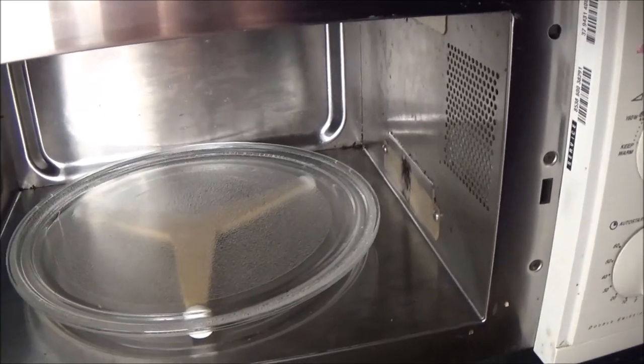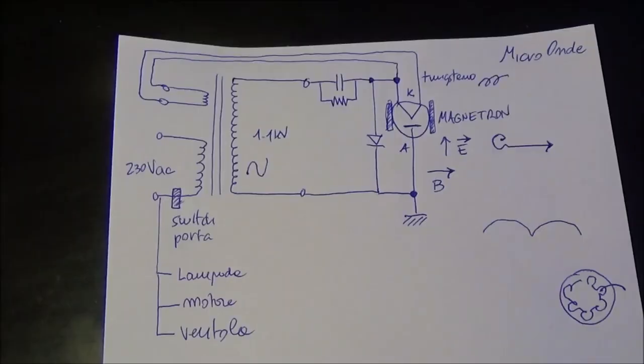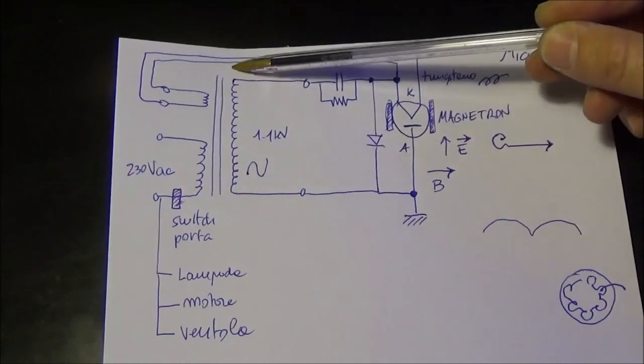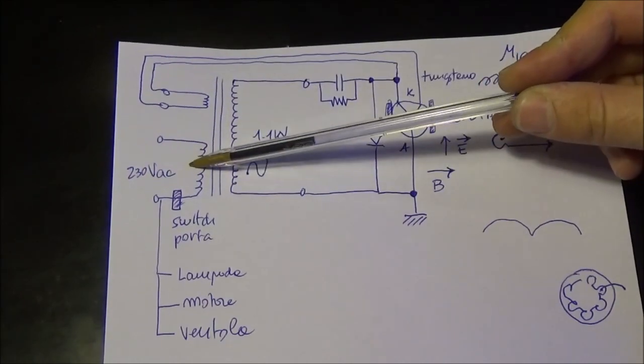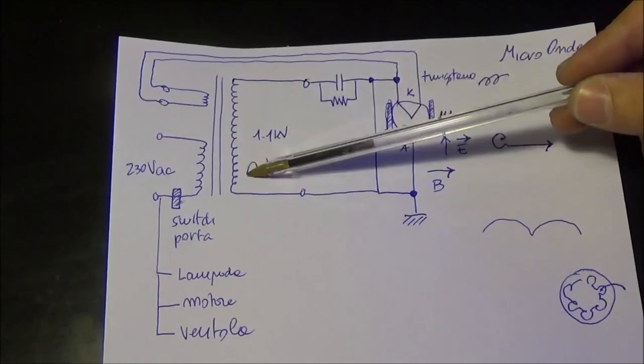So I will tear down the oven and retrieve all the components. This schema is representing the oven principle of operation. So we see a big transformer from the line and neutral here in Europe where there is 230 volts producing 1 kV of voltage.